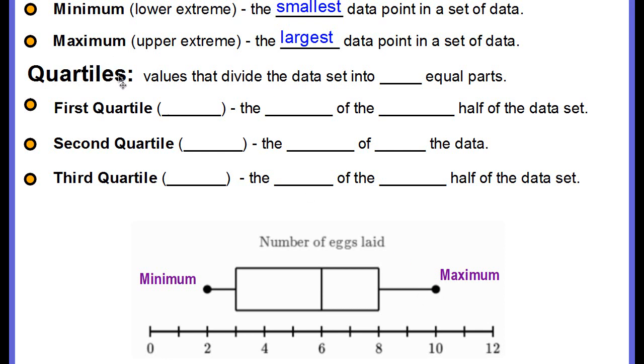Then we have what we call quartiles. There are values that divide the data set into four equal parts. The first quartile, also known as Q1, is the median of the lower half of the data set. And this would be your quartile 1. You see you've got this box, quartile 1. The first quartile is the left side of your box.